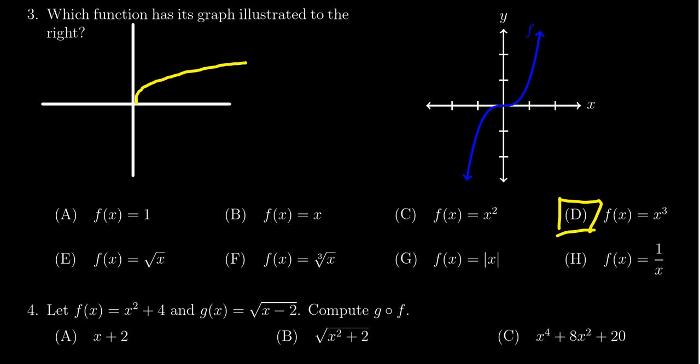f of x equals the absolute value of x. That's our classic v shape. To the right of the y-axis, it looks just like y equals x. To the left of the y-axis, it looks like y equals negative x. So you get that classic v shape.